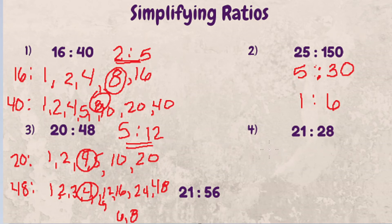Last example. Let's look at 21 to 28. So 21 factors are 1, 21, 3, and 7. 28 are 1, 28, 2, 14, 4 times 7.